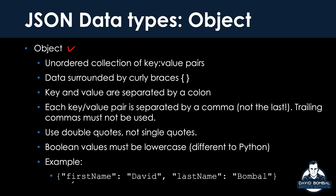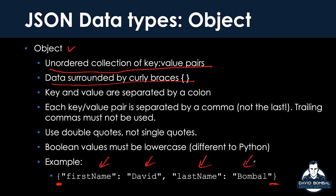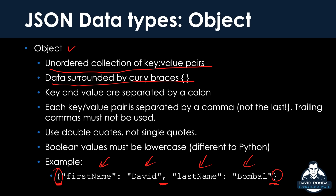For the exam, there are two JSON data types you need to know: objects and arrays. Let's start with an object. A JSON object looks something like this — notice the curly braces. Data is surrounded by curly braces, and it's an unordered collection of key-value pairs. Here's our key: first name, David. Last name, Bumble — notice separated by a comma. The keys and values use double quotes, not single quotes. Each key-value pair is separated by a comma, except the last one. Trailing commas must not be used.